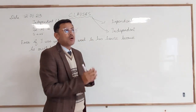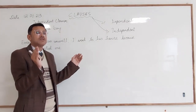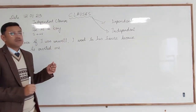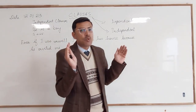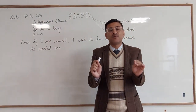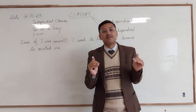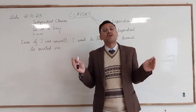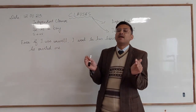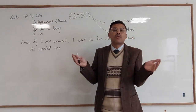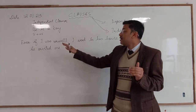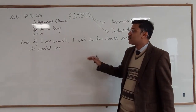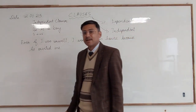Whenever there is a combination of subject and verb in a particular sentence or the whole sentence, it is considered to be a clause. Many clauses together make one sentence. This is the basic difference between clause and sentence. There can be one clause in a sentence, or there can be more than one clause. When two or more clauses are put together and make a complete sentence, it is known as a sentence.